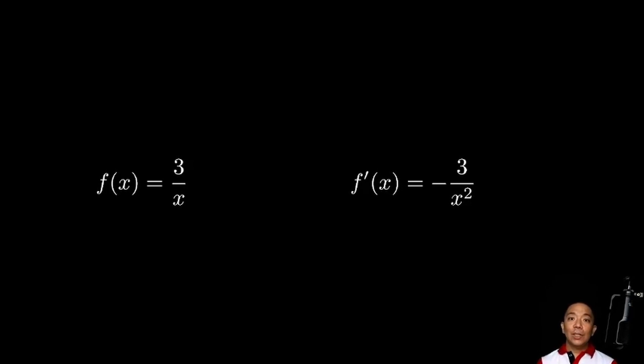To recap, binalikan natin yung idea ng derivative as a function of the slopes of the tangent line to a given function. We've investigated how the derivative of a function will look by plotting points na based dun sa x-coordinate of the original function at yung slope nung tangent line sa point na nandun dun sa original function. Pinlot natin siya on a separate Cartesian plane and we looked at its curve which we confirmed by getting the derivative of f of x equals 3 over x using the definition na limit ng difference quotient. So, I hope na-refresh yung memory natin dun sa concepts na to and salamat sa pakikinig.